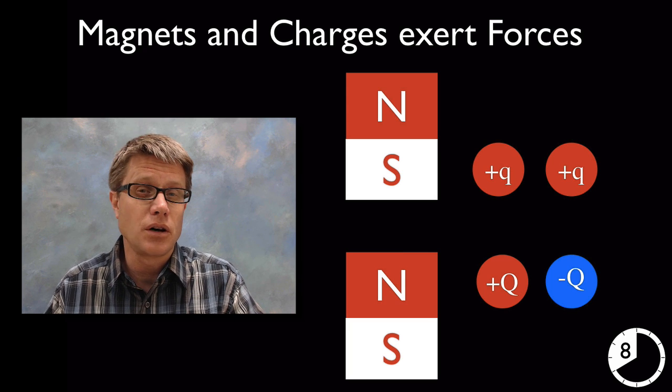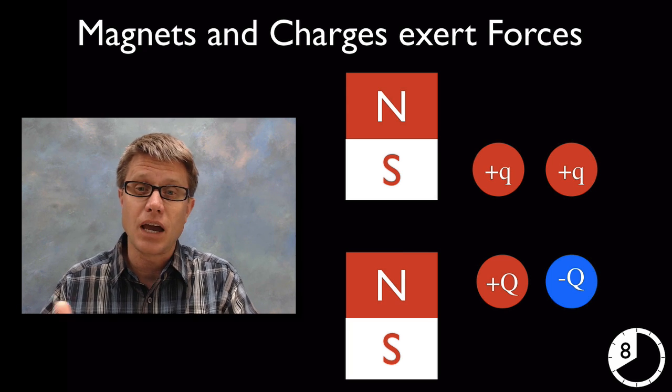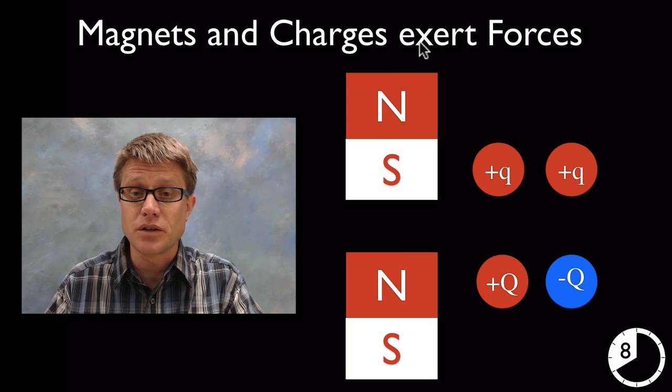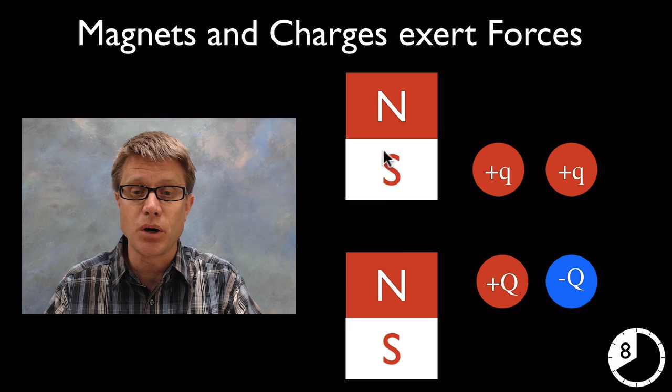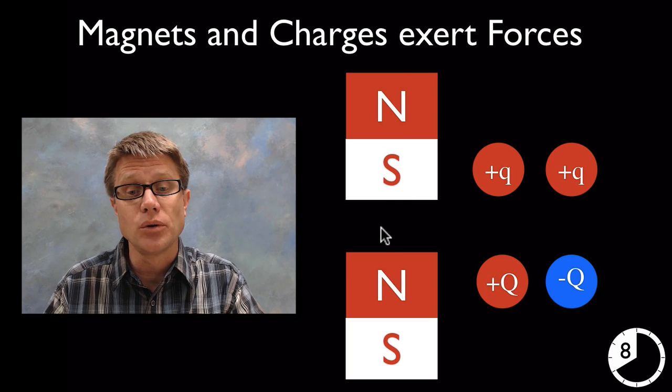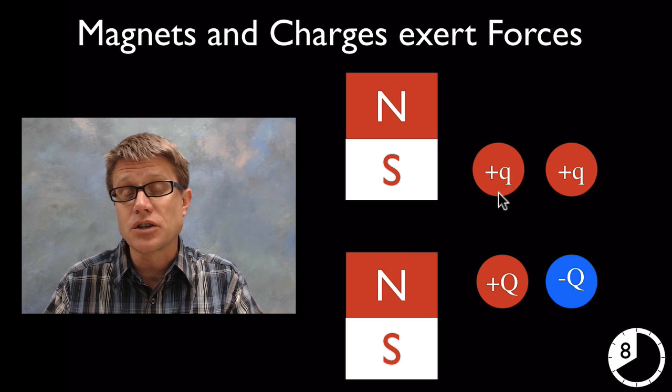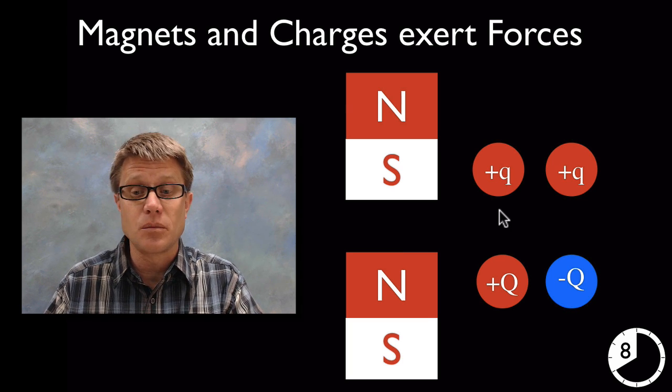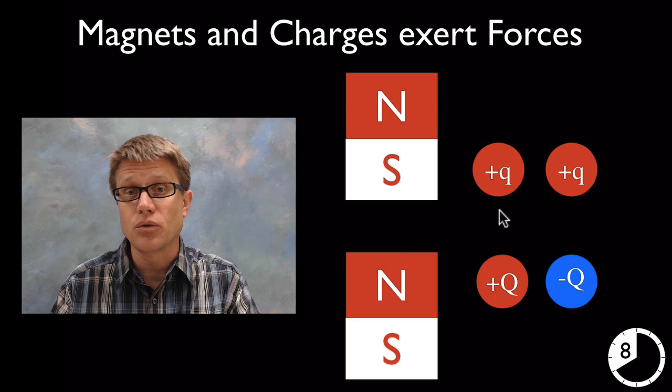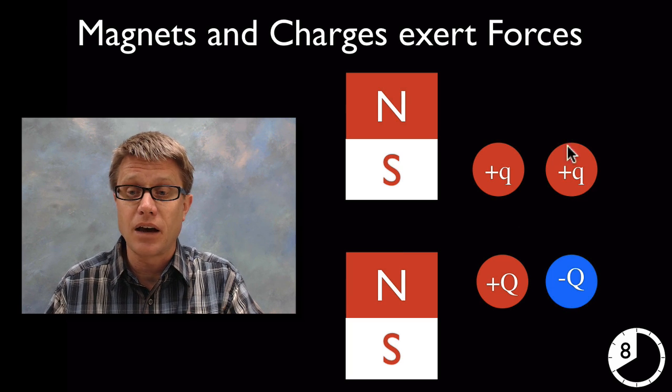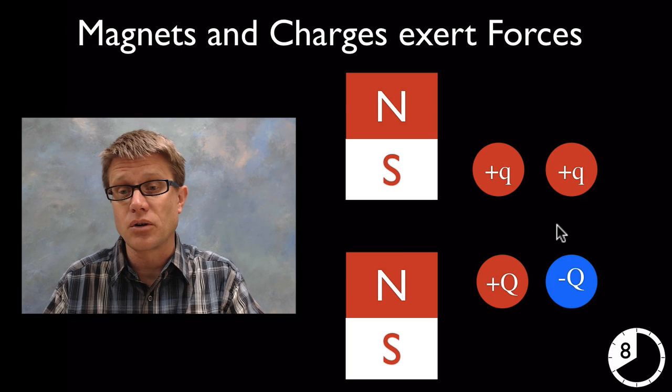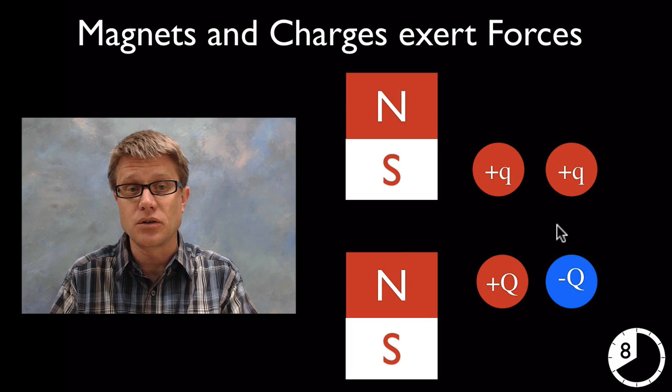Likewise when we're in middle school we should also add the idea of magnets and charges. And so if we have two magnets and they have opposing poles, there's going to be an attractive force between these two. Likewise if we have two charges that have the same charge there's going to be opposition and it's going to repel each other. And if we have attracting charges or unequal charges there's going to be an attractive force between the two.